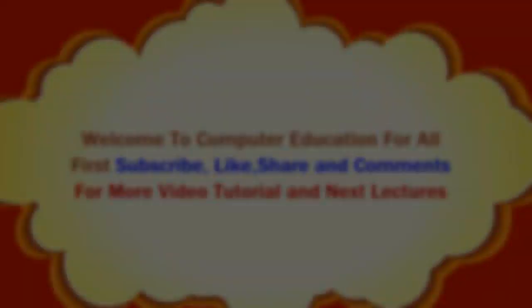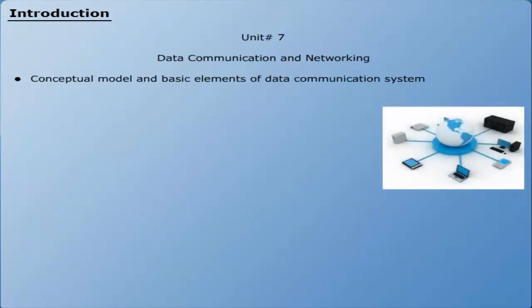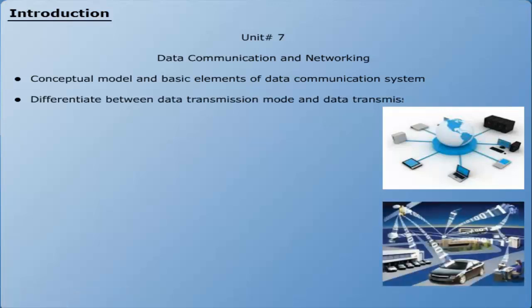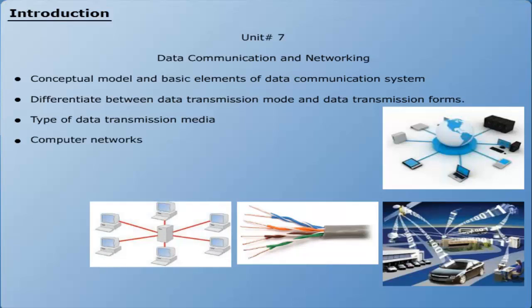This program comprises Unit 7: Data Communication and Networking. After the completion of this unit, you will be able to learn the conceptual model and basic elements of data communication system, differentiate between data and transmission mode and data transmission forms, understand different types of data transmission media, know about basic concepts of computer networks, have knowledge of switching and routing techniques, and understand concepts of the OSI layer model.